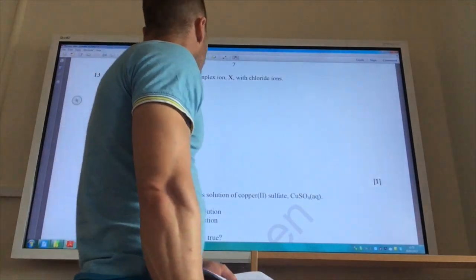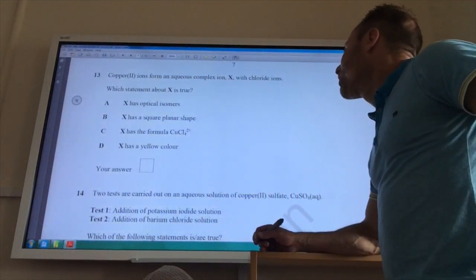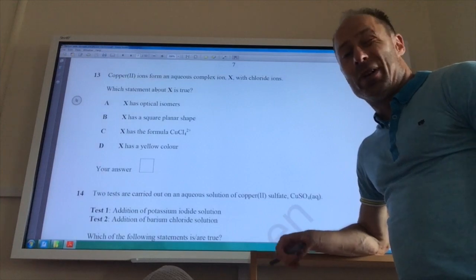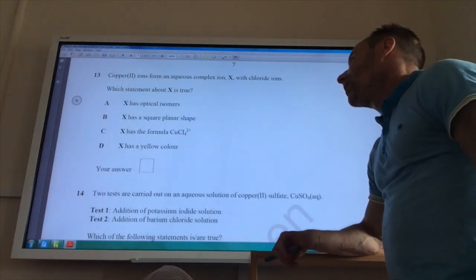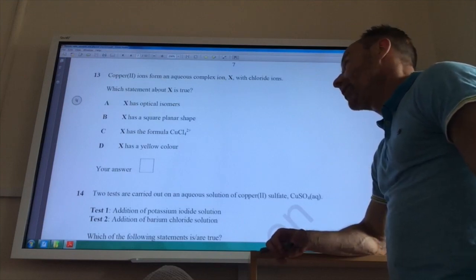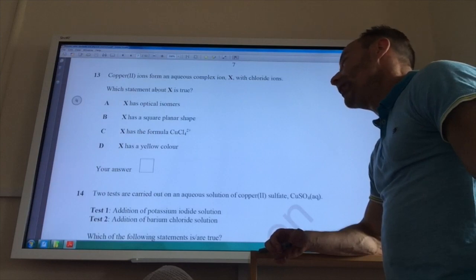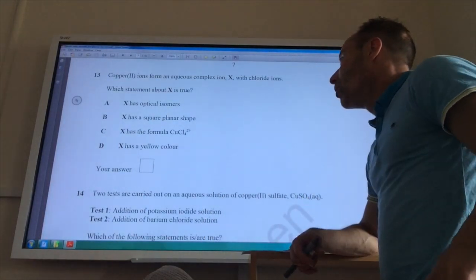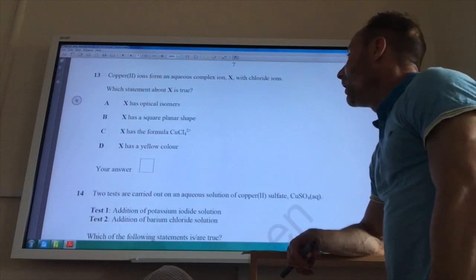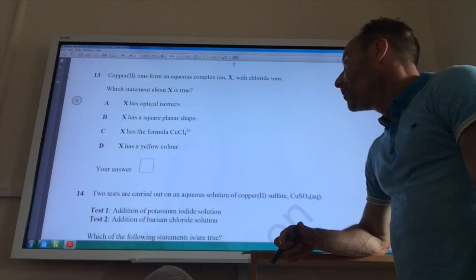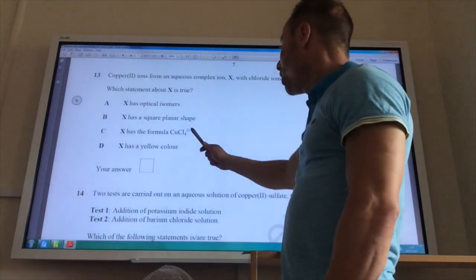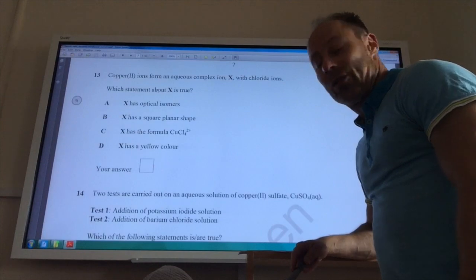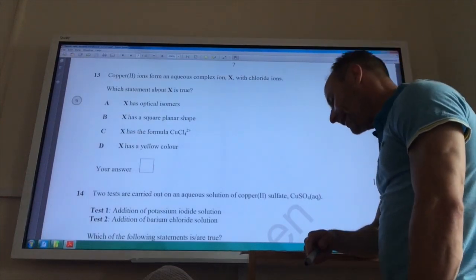A bit of transition metal chemistry now. Copper 2 ions form an aqueous complex ion X with chloride ions. Which statement is true? X has optical isomers. No, it can't have optical isomers because you need a bidentate ligand for it to be optically active. X has a square planar shape. Well, it won't be square planar because copper 2 forms tetrahedral complexes if it's only got 4 ligands attached. X has a formula CuCl4. No, it can't be because if copper is plus 2 chloride is minus 1 so the charge would be minus 2. X has a yellow colour. That's the correct one. It is going to be D for that one.